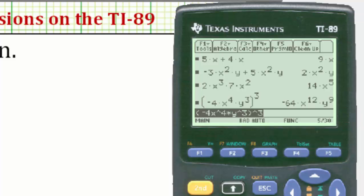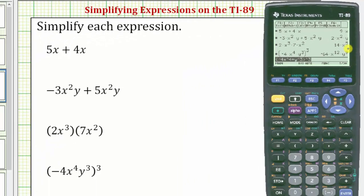The last expression simplifies to -64x to the twelfth, y to the ninth. I hope you found this helpful.